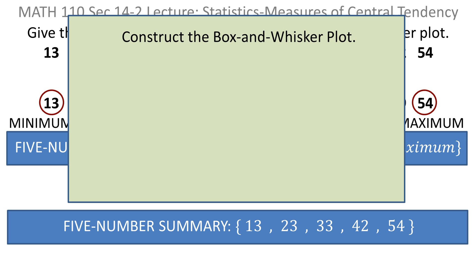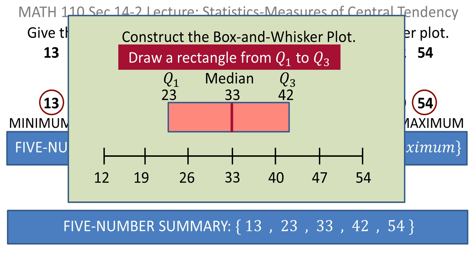Now we want to do the box and whisker plot. For the box and whisker plot, you always draw a rectangle from the first quartile value, which was 23. So you find 23 and you start the left side of your rectangle at that. Then you find the third quartile value, which in our case was 42, and you take the right end of the rectangle and draw it at 42. Then you just finish off the rectangle.